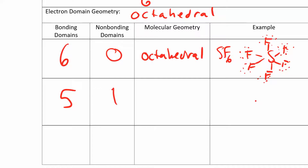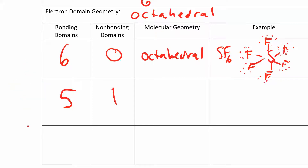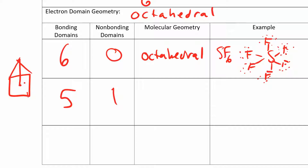If you want to think about what an octahedral looks like: you have a square with something on the top and something on the bottom. So we have a square, something on the top, something on the bottom. Now what we're doing is suppose we take off the one on the bottom — now I have a square pyramid. If you think about this as looking like a pyramid with a four-sided base, that's a square pyramid.